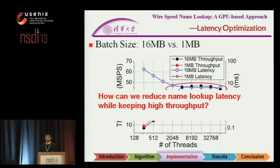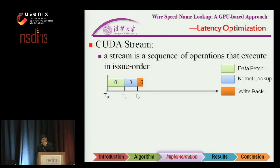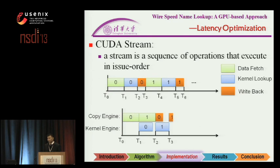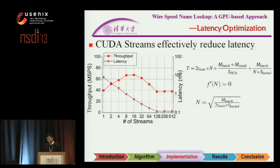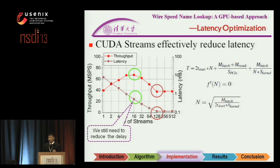To reduce latency while achieving high throughput, we change the programming style for the GPU platform. Rather than sequentially executing data — which brings longer latency — our design implements a pipeline parallel execution mode between the copy engine and kernel engine. In this way, we keep the kernel engine working continuously to increase throughput. When we increase the number of streams, we can reduce latency, but throughput drops accordingly, so we need to do more.